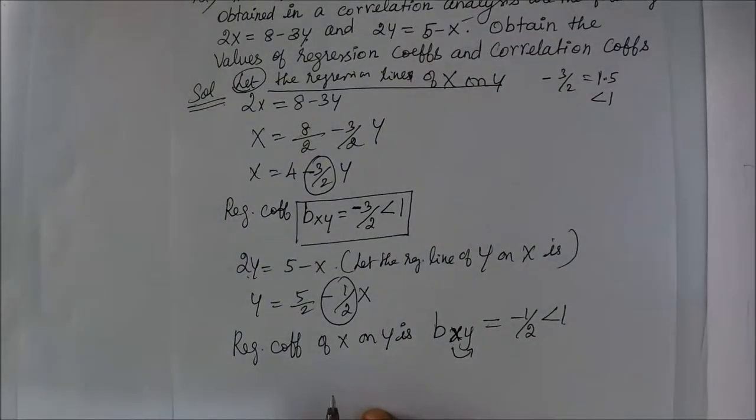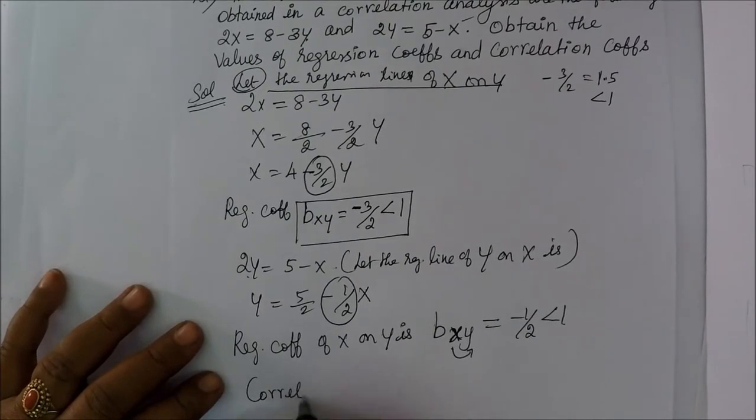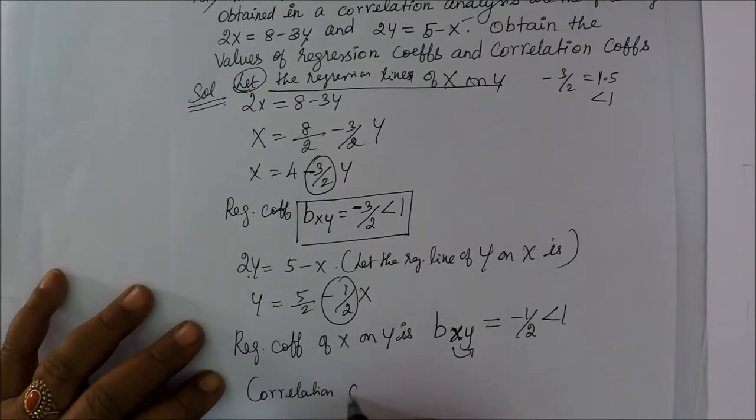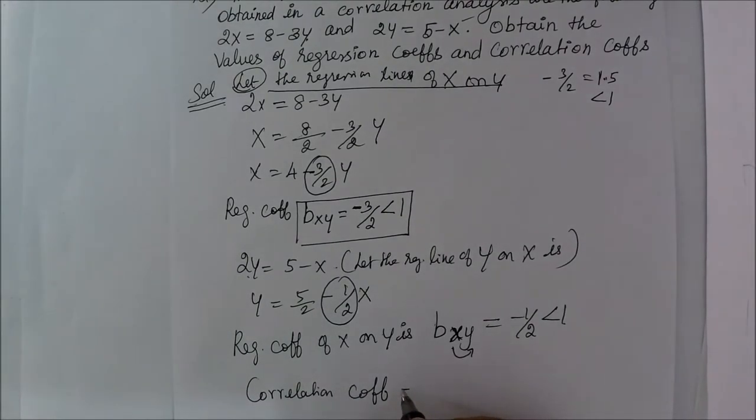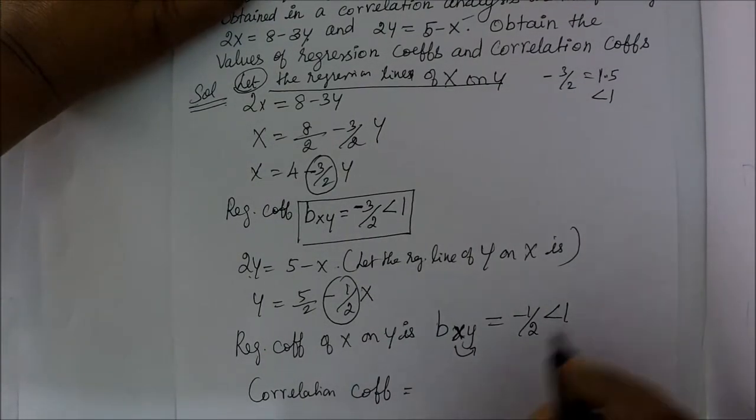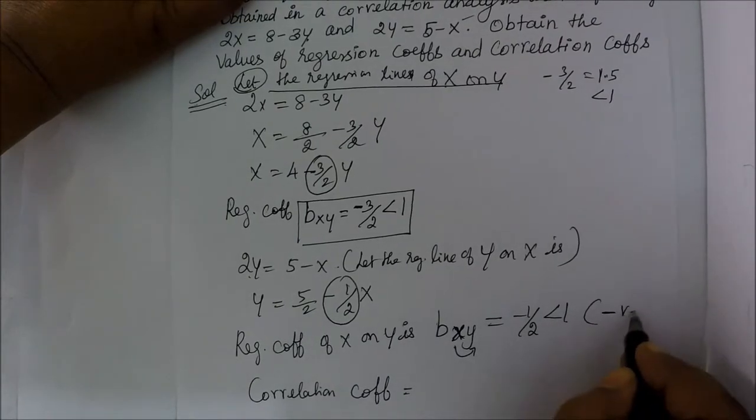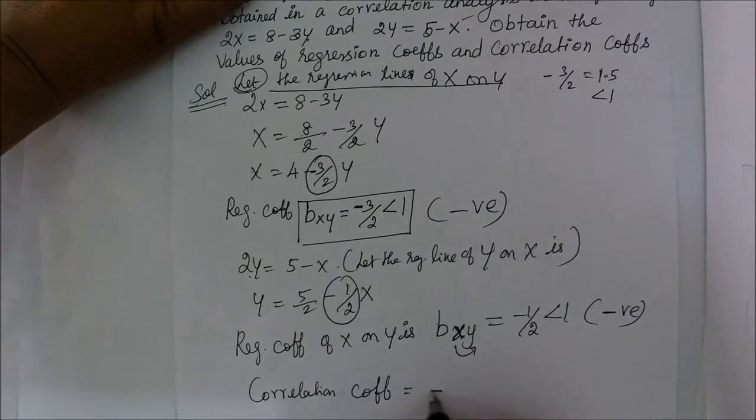Now, let's find the correlation coefficient. Therefore, correlation coefficient. The answer is less than 1. The formula is negative. The answer is negative. Now we have minus.